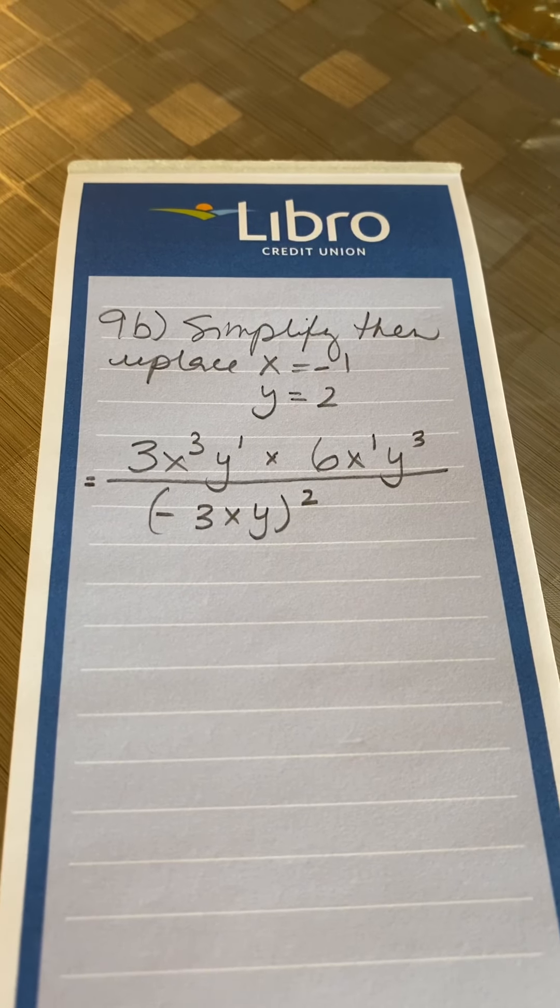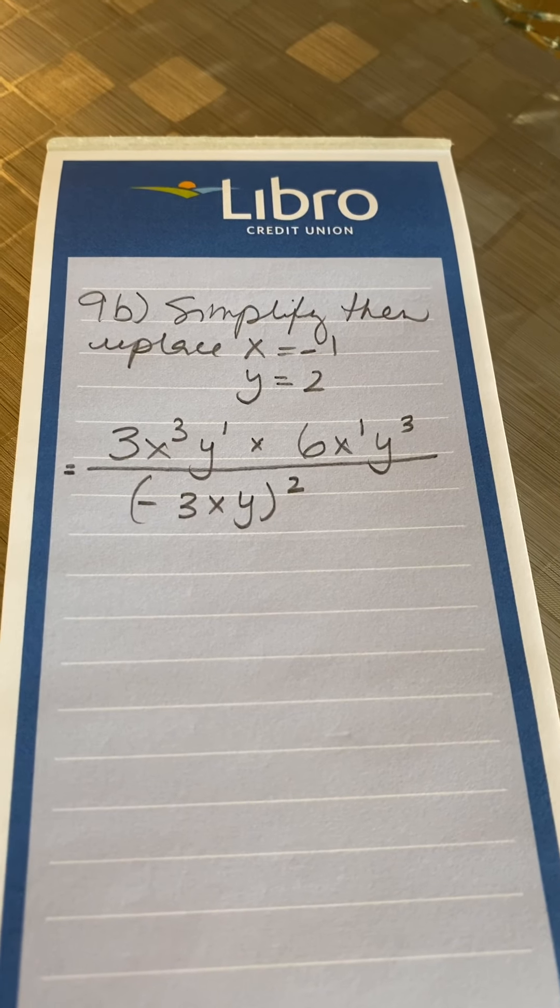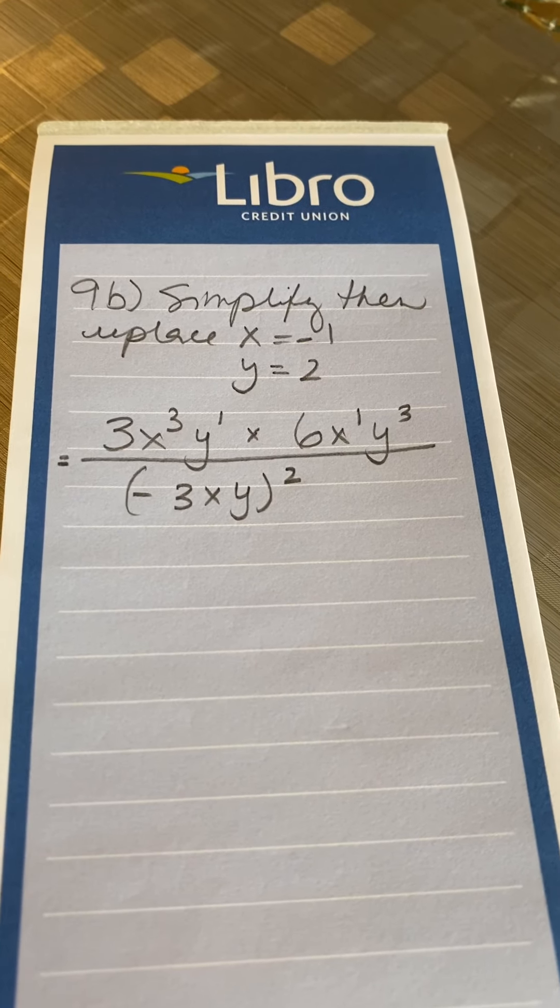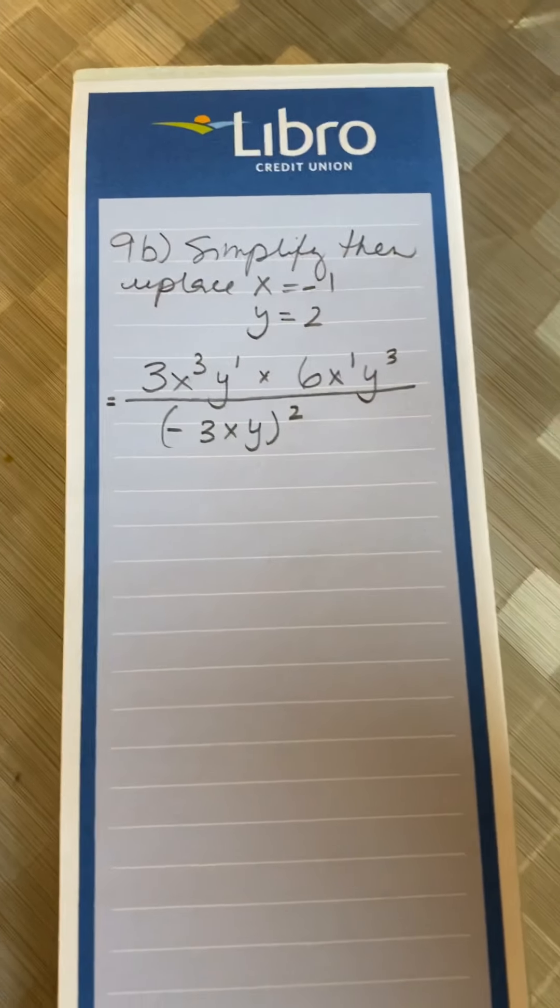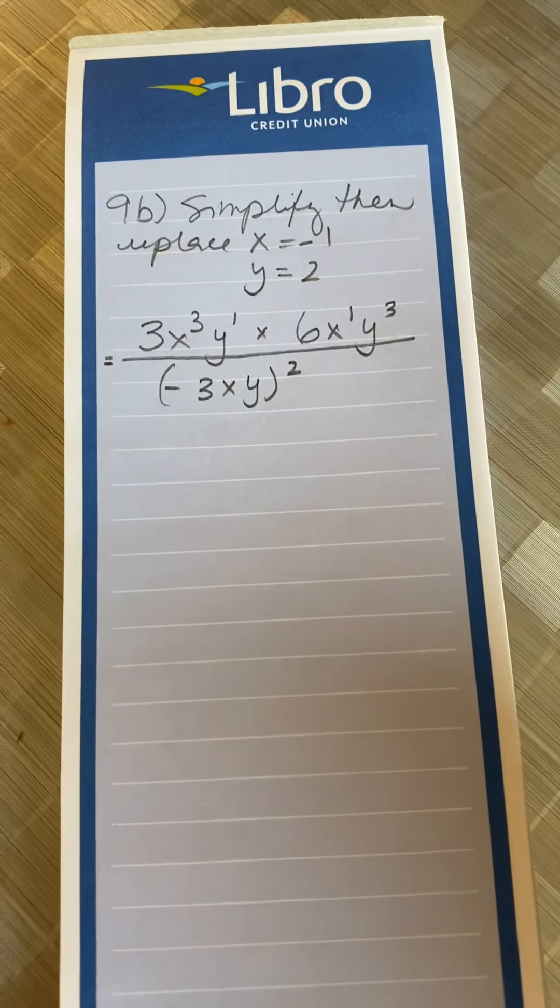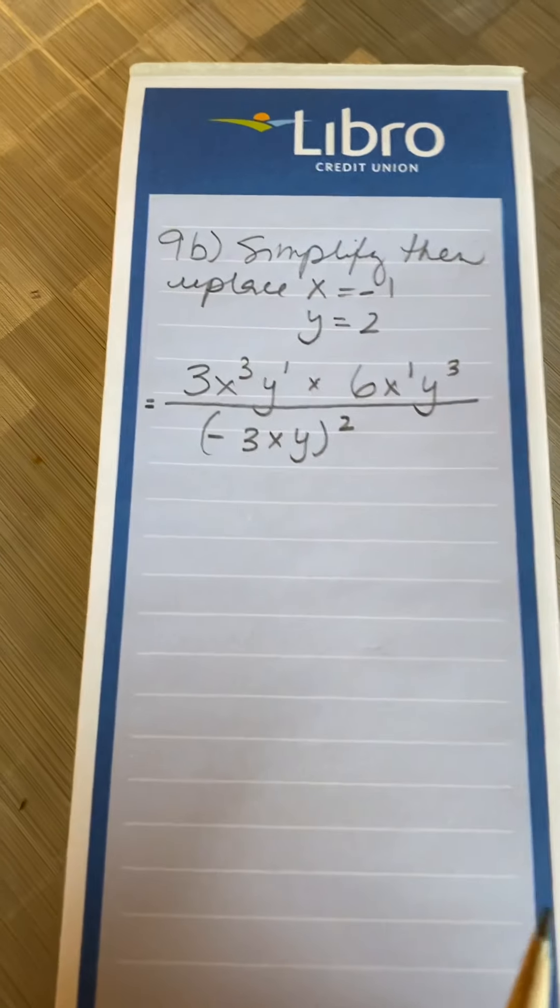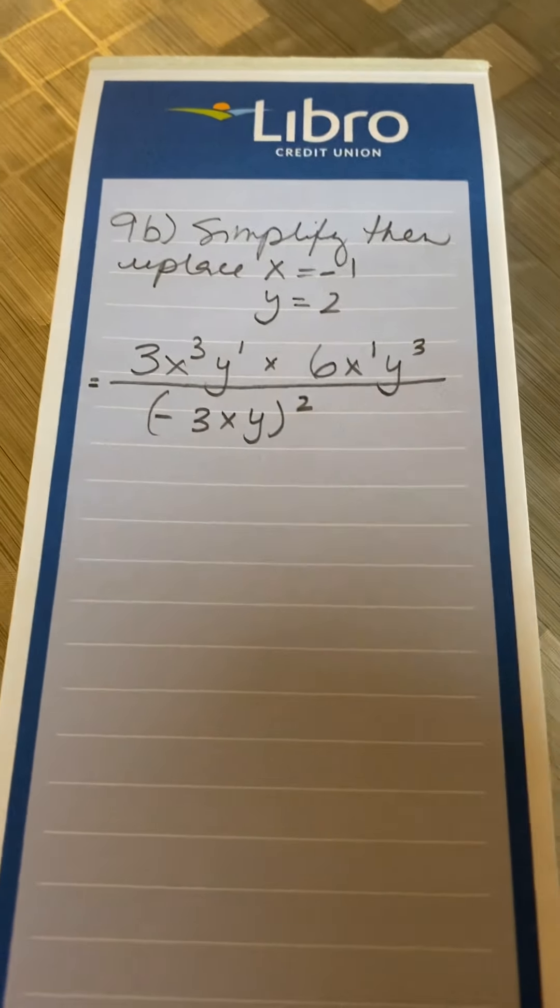Question 9a, you just directly replace your x's and y's with those values without simplifying, and then what you're doing in question b, you're simplifying first and then replacing it, and you're comparing your answer, so you should have the same answer for 9a and 9b.